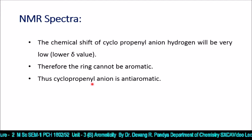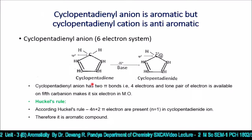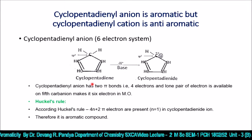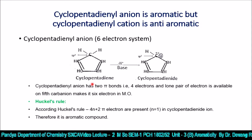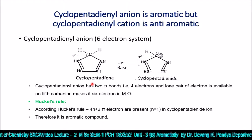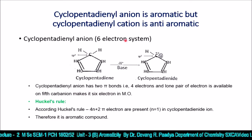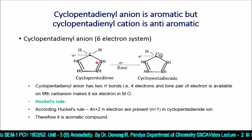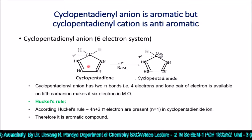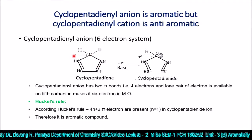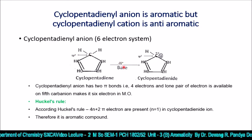Resonance stability is another factor to prove the aromatic character of compounds. The next example is the cyclopentadienyl anion — we need to prove it is aromatic — and the cyclopentadienyl cation, which is anti-aromatic. The cyclopentadienyl anion is a six-electron system. In cyclopentadiene, there are two pi bonds giving four π electrons, and one carbon is sp3 hybridized.